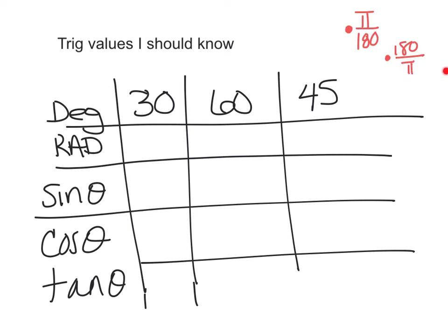So you should be making notes off to the side - this is your review. You should be able to quickly convert 30 degrees into radians. Hopefully you don't have to use the formula and just know that 30 degrees is pi over 6, 60 degrees is pi over 3, and 45 is pi over 4. Those are our key angles.